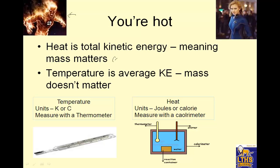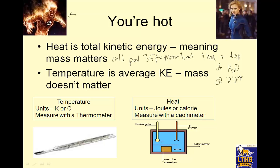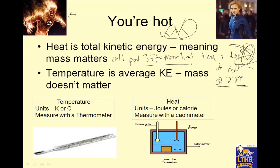A good comparison would be a cold swimming pool at, let's say, 35 degrees Fahrenheit — it has more heat than a drop of boiling water. Because it's got so much more mass, it could melt more ice cubes. If I threw an ice cube into a swimming pool at 35 degrees, there's enough heat to melt the ice cube. But one drop of boiling water can't melt a whole ice cube. The average particles in the boiling water are going faster, and in the swimming pool they're going slower, but there's just more of them.